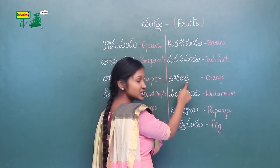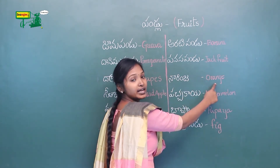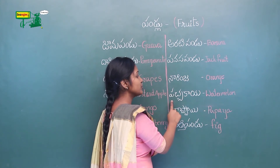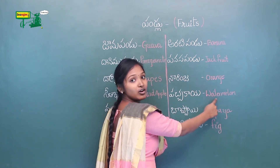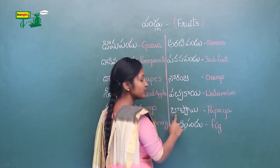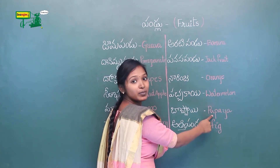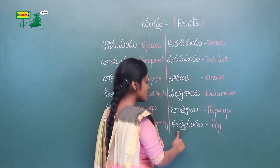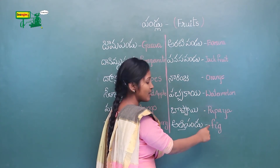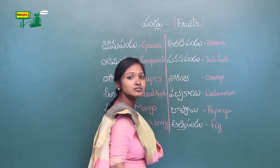Naringa Pandu means Orange. Puchakaya means Watermelon. Bopai means Papaya. Arati Pandu means Fig.